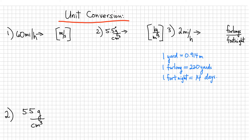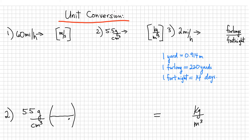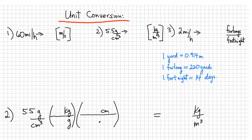Here's problem number two: 5.5 grams per centimeter cubed, and I want to get it in kilograms per meter cubed. This one has a unit raised to a power. I need to eliminate grams, so I divide by grams and put kilograms in the numerator. Next, I need to convert centimeters cubed to meters cubed — I need to do it three times, so the easiest way is to raise the bracket to the power of 3, which cubes everything in that bracket.